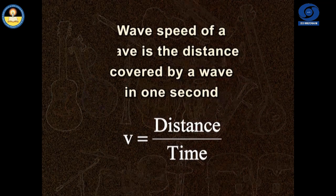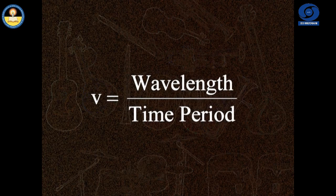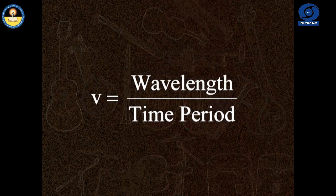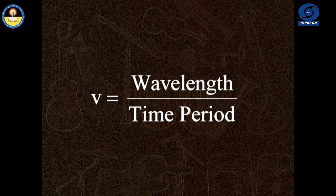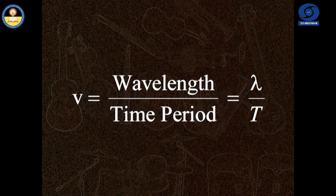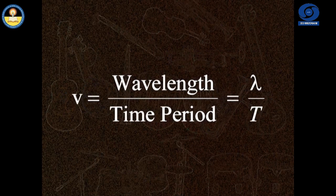The time required for covering the distance of one wavelength is the same as the time period. So, the relation for the wave speed comes out to be λ upon T.